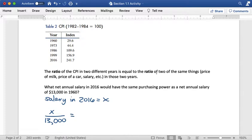And that's the ratio of two of the same things. So salary in 2016 over salary in 1960. And then we use the index numbers from the CPI to write the other ratio.